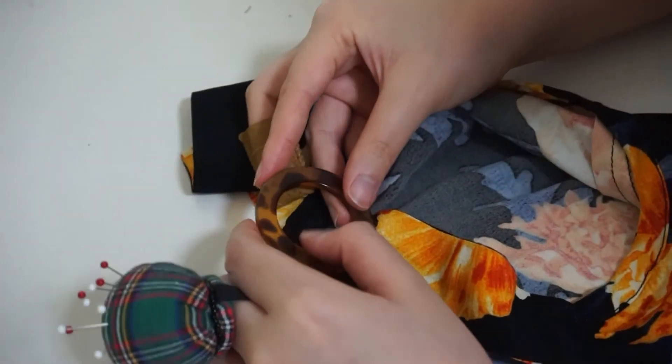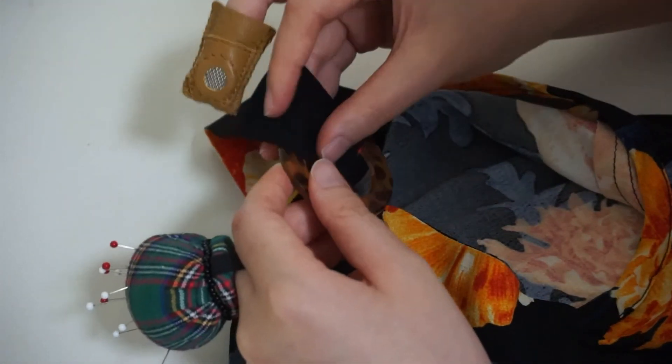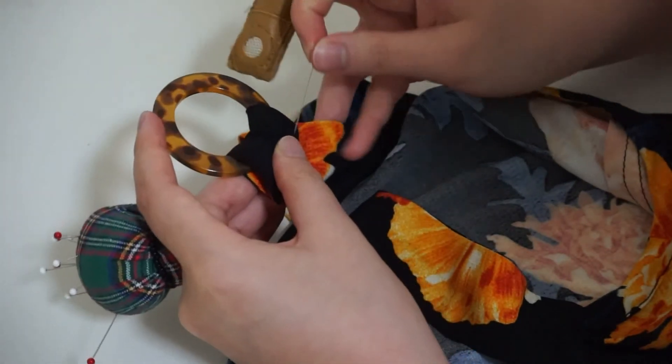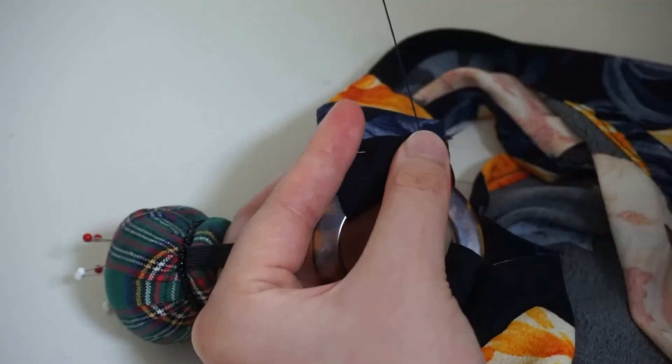On the original dress, there was a little ring detail on the shoulder straps and I really liked the feature. So I got 2 acrylic rings from the internet and I folded the shoulder straps around them, wrapping the rings and sew the straps with hand stitching.